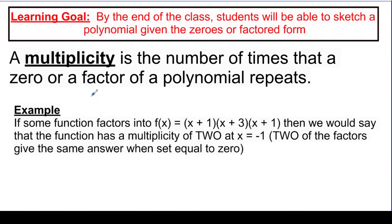If you take a look at the example, this will become very clear. If there was some polynomial and I factored it, and when I factored it, I got these three parts: x plus 1, x plus 3, and x plus 1, I would say that that one factor, x plus 1, repeats twice.